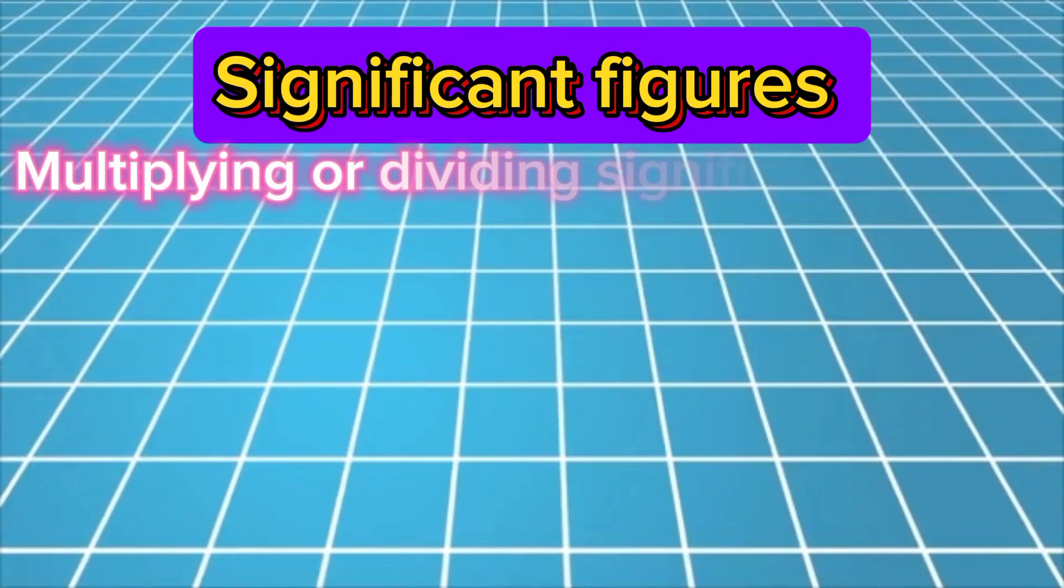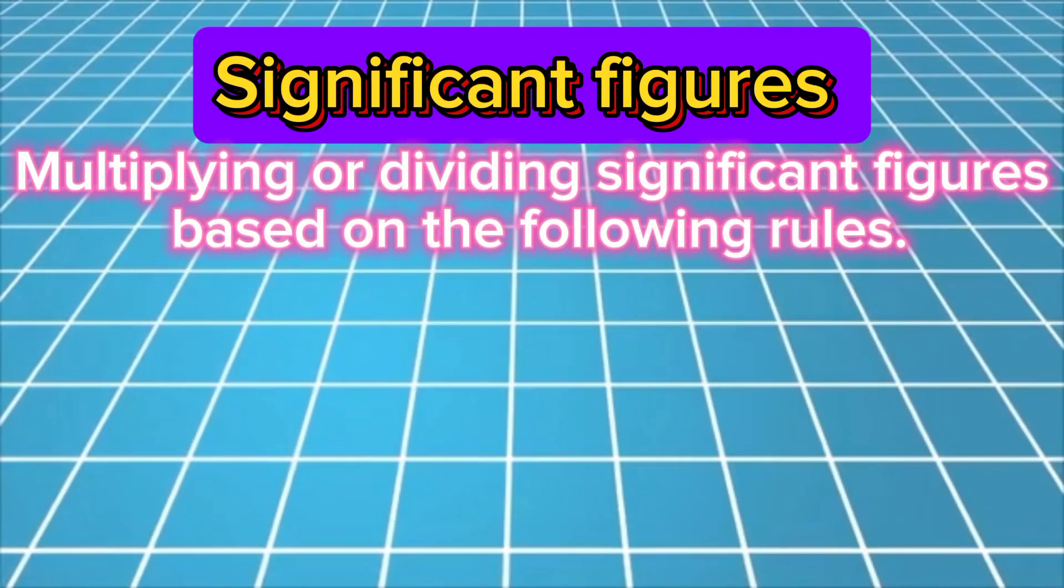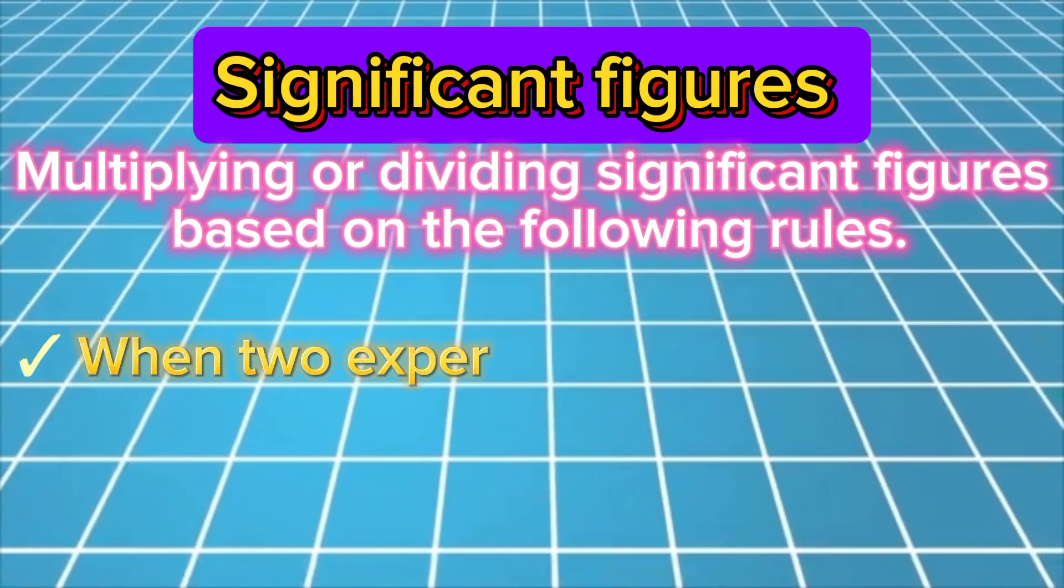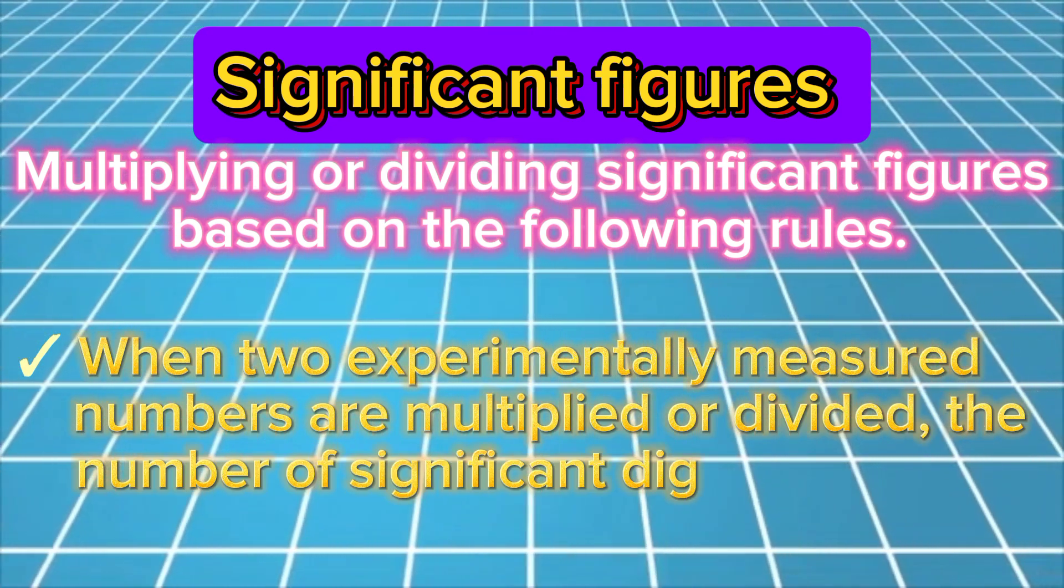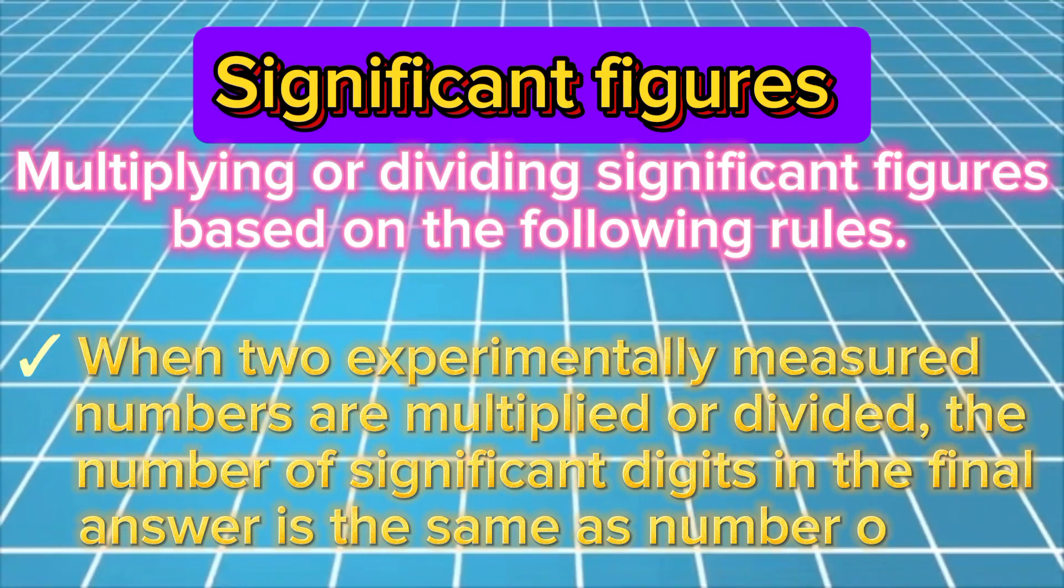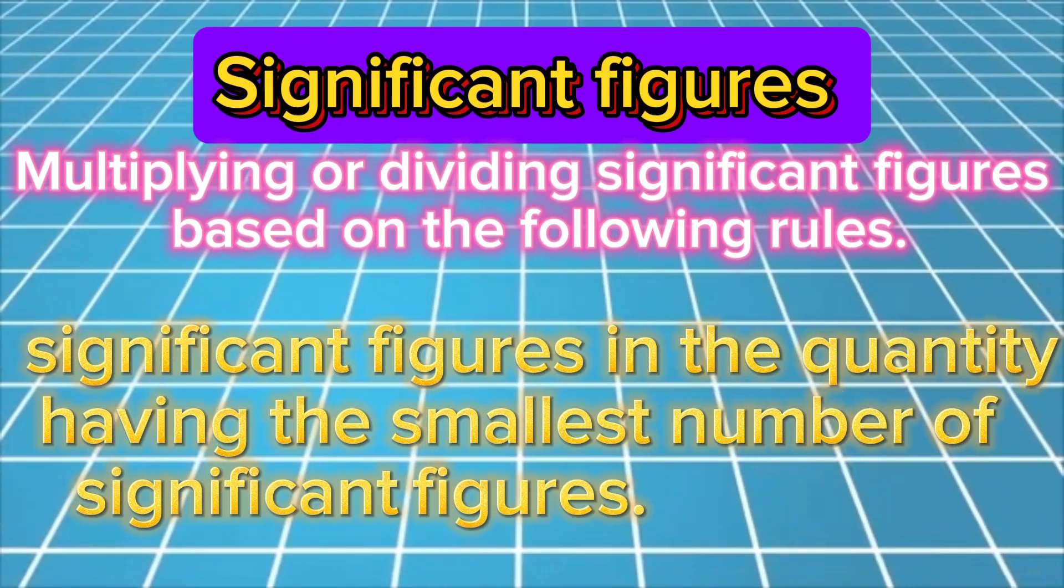Multiplying or dividing experimentally measured values with different significant figures is based on the following rule. When two experimentally measured numbers are multiplied or divided, the number of significant digits in the final answer is the same as the number of significant figures in the quantity having the smallest number of significant figures.